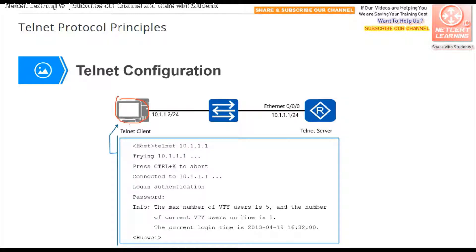On the client, type 'telnet' followed by the destination IP address. They will communicate using TCP port 23. A password prompt will appear, and you type the password — Huawei@1.2 — that you configured on the Telnet server. Then the device prompt will appear on your terminal. That is all for the Telnet configuration.